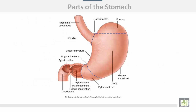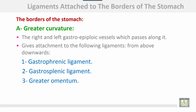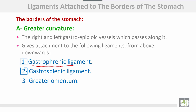In the diagram, above the horizontal line is the fundus of the stomach, to the right side of the vertical line is the pyloric part, and the remainder is the body of the stomach. Ligaments attached to the borders of the stomach: at the greater curvature, the right and left gastro-epiploic vessels pass along it and give attachment to the following ligaments from above downwards — the gastrophrenic ligament to the diaphragm, the gastrosplenic ligament to the spleen, and then the greater omentum.